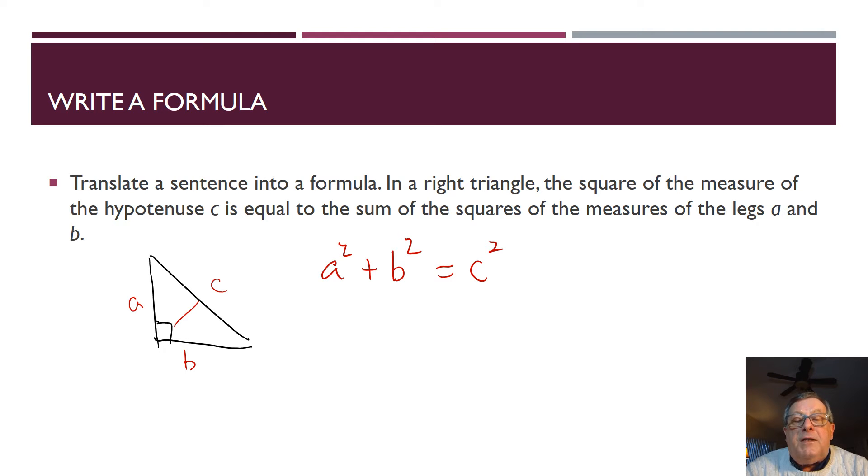So, the sum of the square of the legs is equal to the square of the hypotenuse. Now, you may or may not recognize this at this stage, but this is what is called the Pythagorean theorem or the Pythagorean formula.